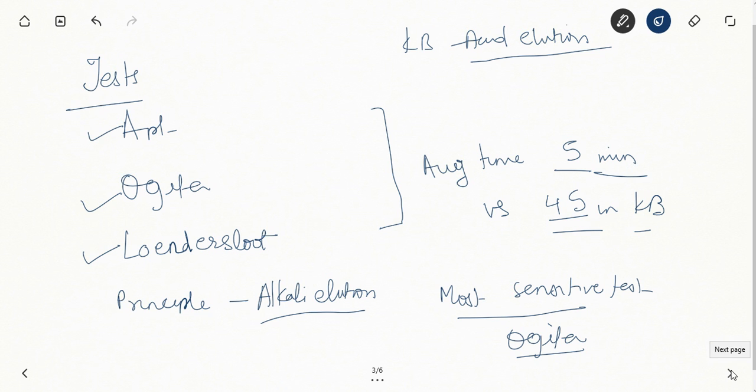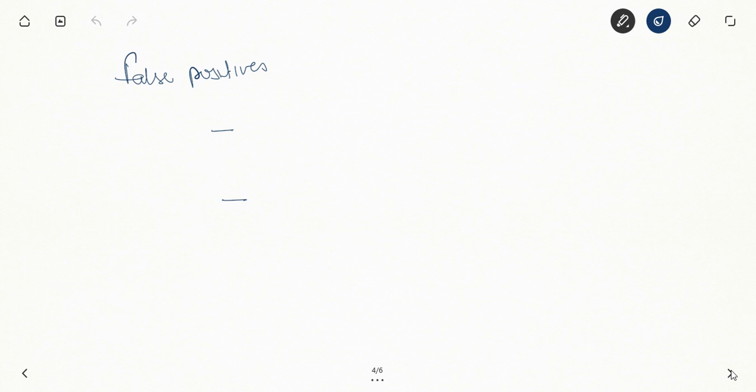Now what could be a cause of false positive test? False positive apt or ogita or Kleihauer-Betke. Since the principle is fetal hemoglobin, HbF, any condition where HbF is rising in the mother, you will have a false positive test.